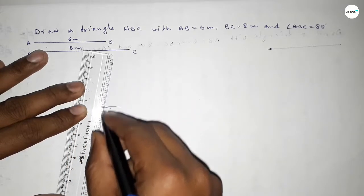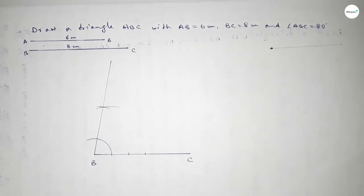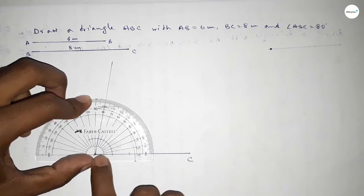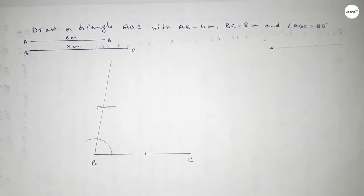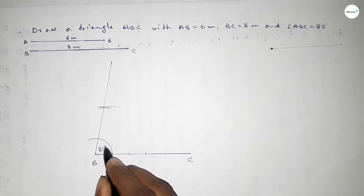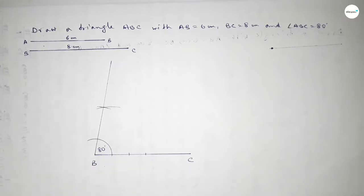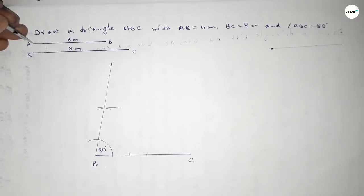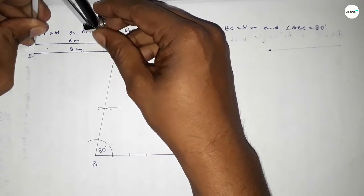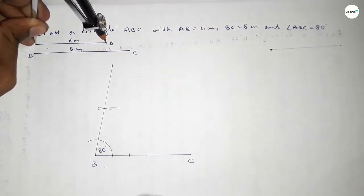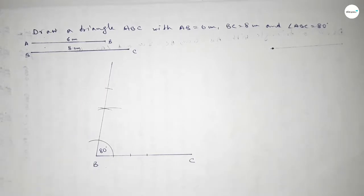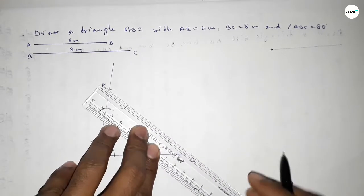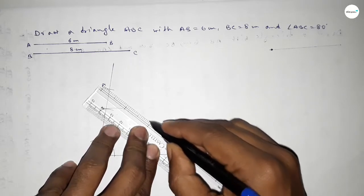Now joining this to get the 80 degree angle. Checking whether it is 80 degree or not — this is perfectly 80 degree. Next, taking the length AB equal to 6 centimeter by using the compass, putting the compass on point B and cutting here, taking a point.